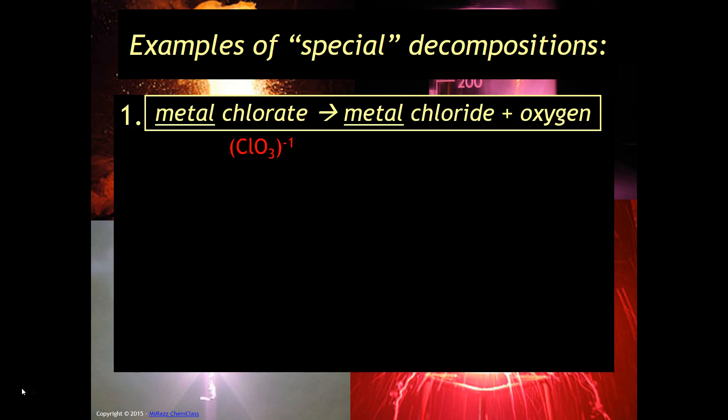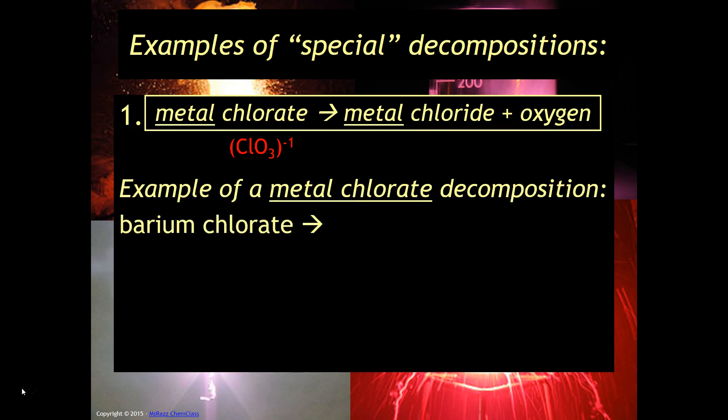I think you can kind of see it makes sense that you're going to break it up into a metal chloride and oxygen just by the fact that chlorate is ClO3. So if you had barium chlorate, so this is an example of a metal chlorate, it's going to break down into a metal chloride and oxygen. So just change the word metal into barium. So it's going to be barium chloride plus oxygen. This is always going to be part of the product.